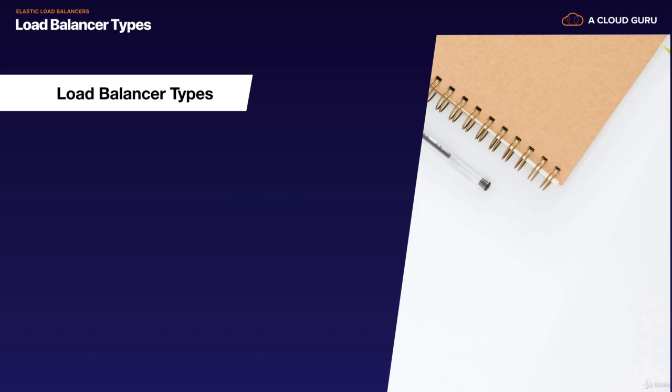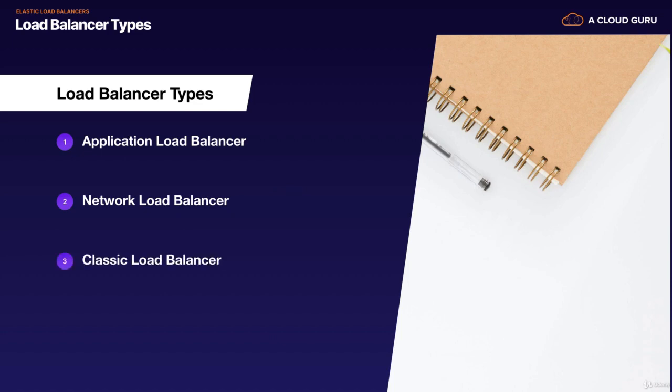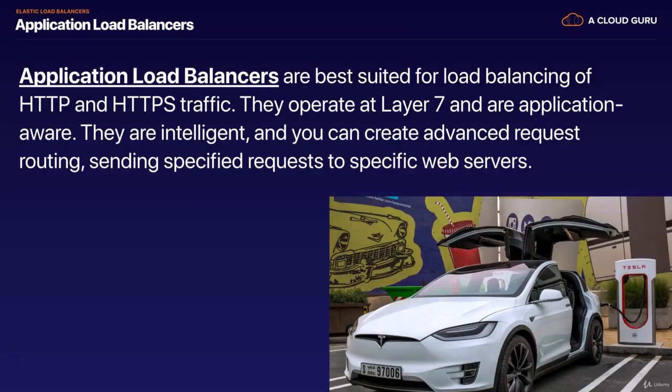With AWS, there are three different types of load balancers. We've got our application load balancer, our network load balancer, and what's called our classic load balancer, which is the old school version. Let's start with application load balancers.